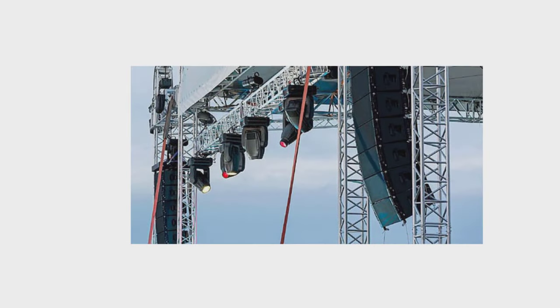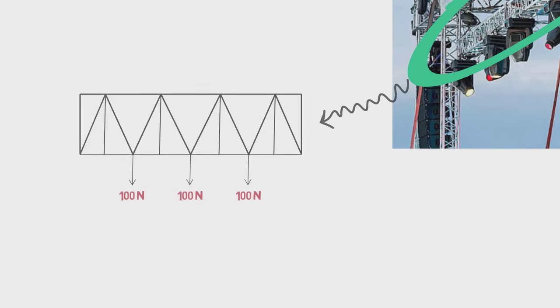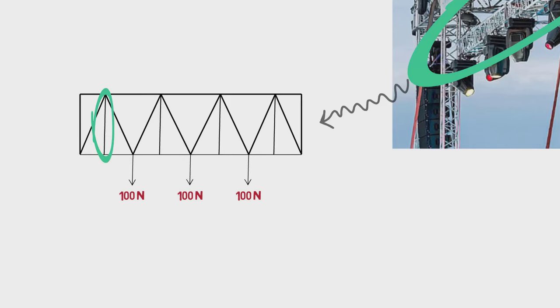To understand it better, let's take a look at this picture. For example, if we draw the free body diagram of this portion, it would be like this where lights are 100 Newton. Let's for now assume that this member is a zero force member, but if for some reason we had to change the position of 100 Newton stage light to this location, then that member won't be a zero force member anymore.